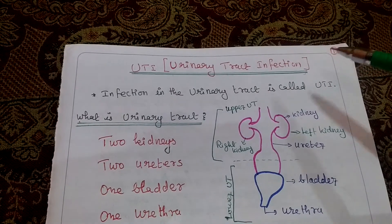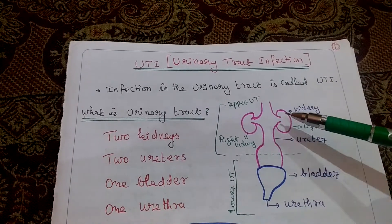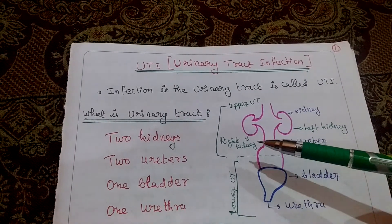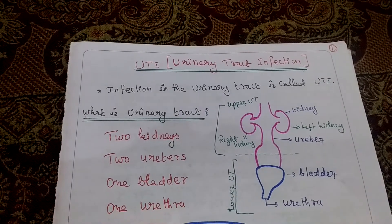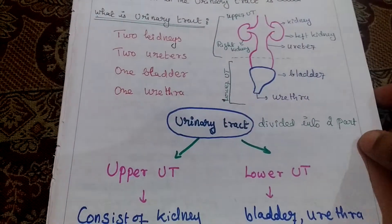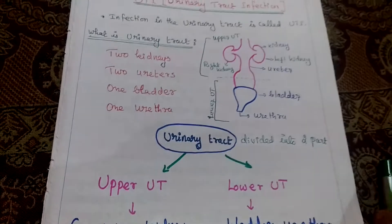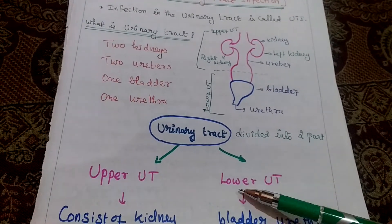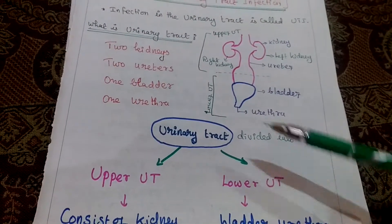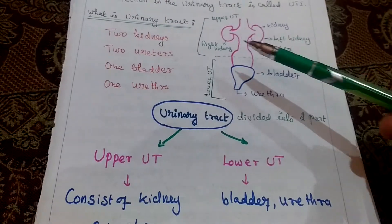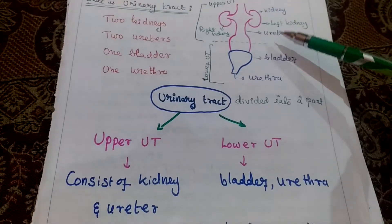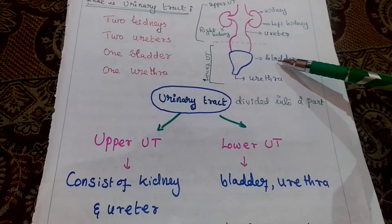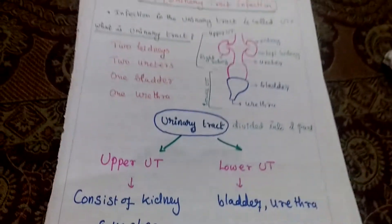What is the urinary tract? It consists of 2 kidneys, 2 ureters, 1 bladder, and 1 urethra. The urinary tract is divided into 2 parts: the upper urinary tract and the lower urinary tract. The upper part consists of the kidney and ureter, and the lower part consists of the bladder and urethra.